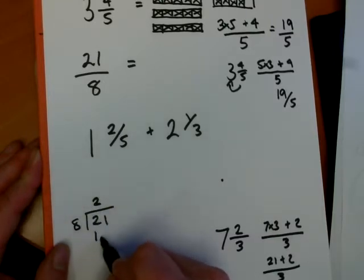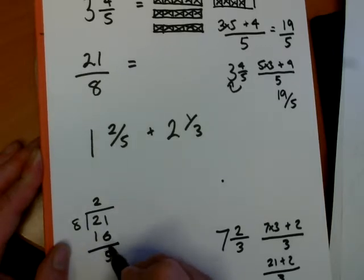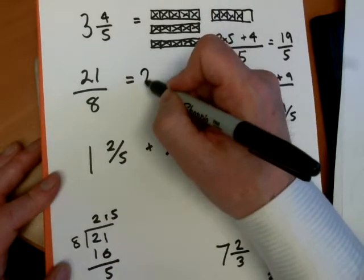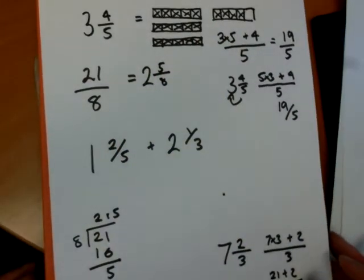And the difference between 21 and 16 is 5, is the remainder. So you have 2 remainder 5. We write that as 2, put the remainder at the top, and then keep the denominator the same.